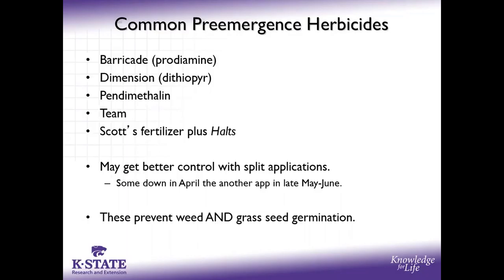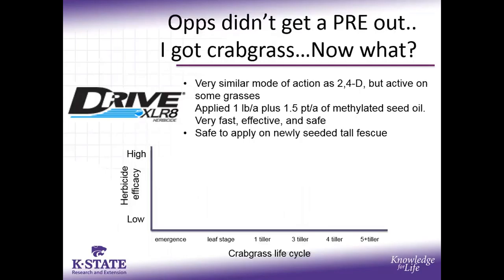These prevent weed and grass seed emergence — not germination. The seed actually germinates but the shoot or root hits that herbicide barrier and dies. There is a study we've been doing for the past three years looking at depleting the seed bank. If you do pre-emerge herbicides, rotate to another pre-emerge the next year, and then spot spray, you end up getting rid of most of the crabgrass in your area over time. Problem is crabgrass will stay dormant for a long time — the year you think you've got it under control, everything pops out of dormancy and goes crazy.